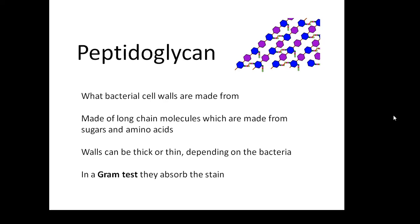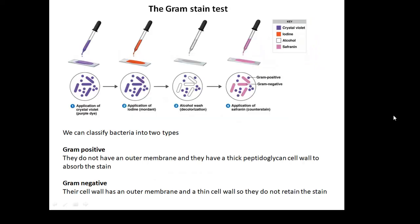In something called a gram test, bacteria absorb a stain. There are two types of bacteria: gram-positive and gram-negative. Gram-positive ones don't have an outer membrane and have a thick peptidoglycan cell wall which absorbs the stain — they change colour. The gram-negative ones have an outer membrane and a thin cell wall, so they don't keep the stain.